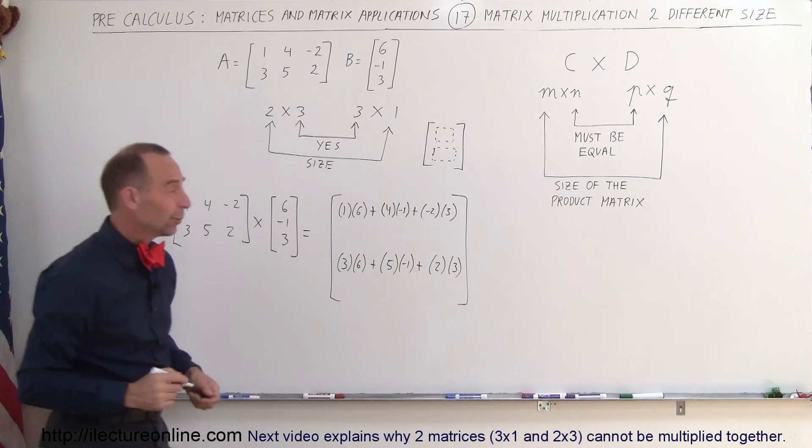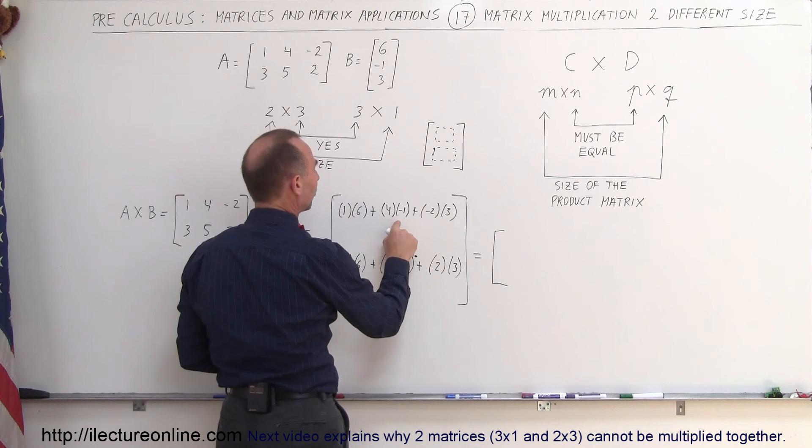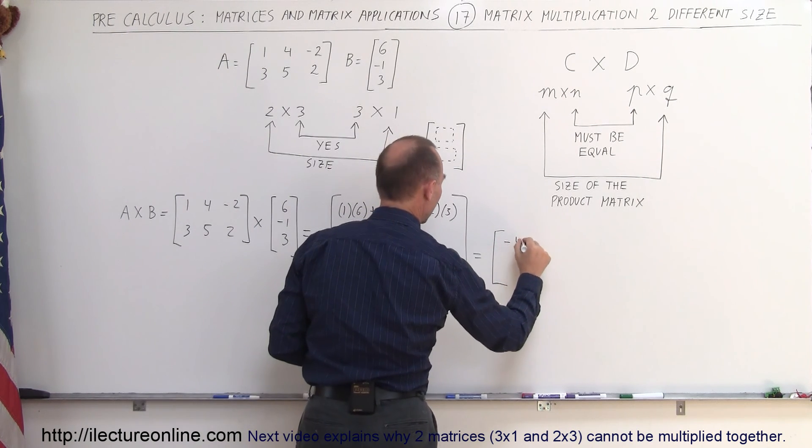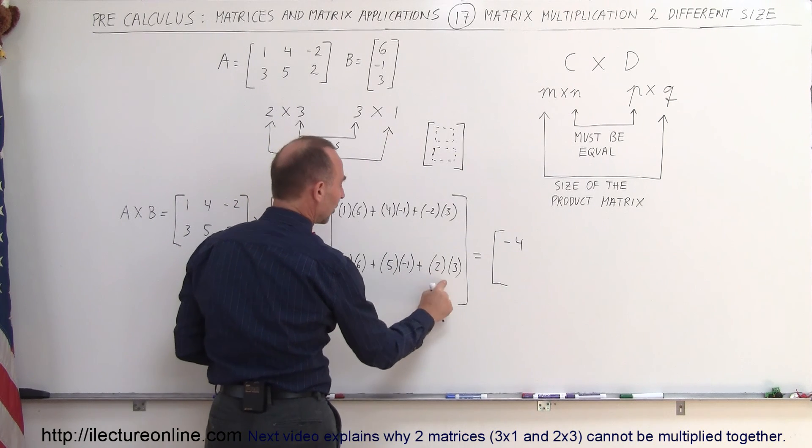And then if we simplify that, we get the following. That would be 6 minus 4, that's 2, minus 6, that would be a minus 4. And over here we get 18 minus 5 is 13, plus 6 is 19.